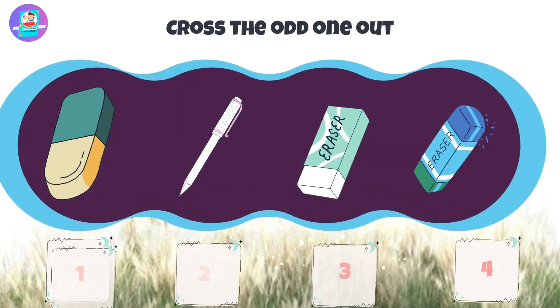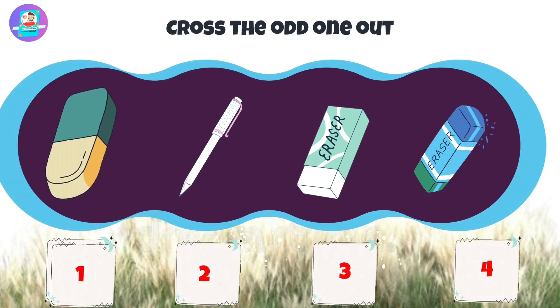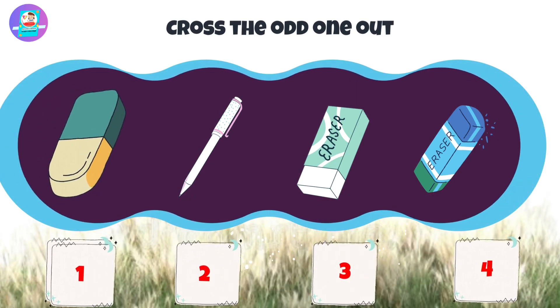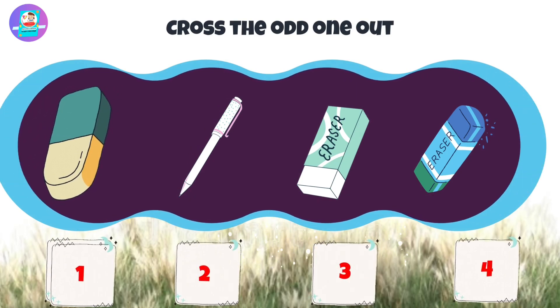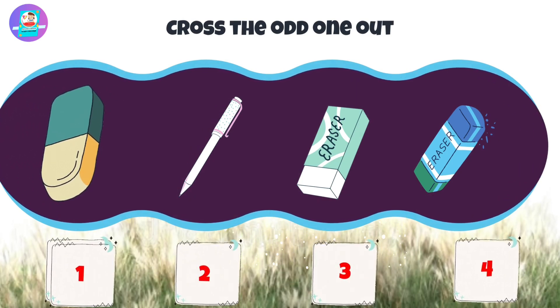Next, there are 4 pictures: 1, 2, 3, 4. Put the odd one out.